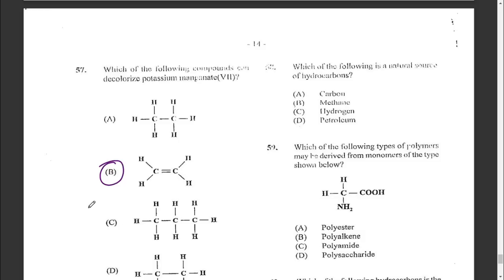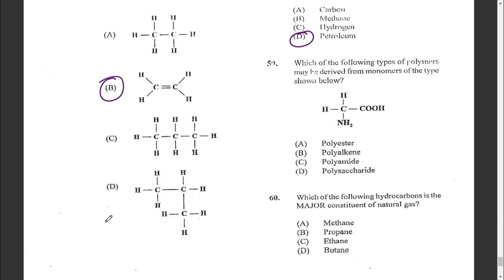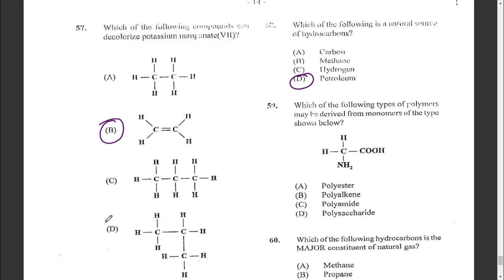Question fifty-eight: which is a natural source of hydrocarbons? The answer is petroleum, which contains a mixture of hydrocarbons including alkanes and alkenes, along with natural gas. Question fifty-nine: which type of polymer may be derived from the monomers shown? The answer is polyamides — that is C.